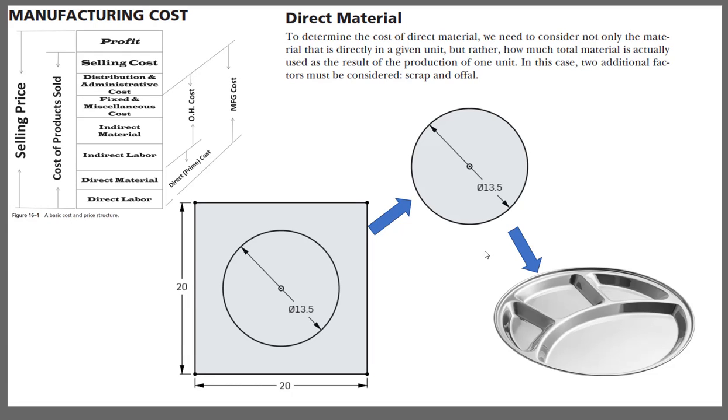Today I am going to talk about the direct material cost estimation associated with the product. Let's say if you want to create a plate as shown in the figure here. Usually the manufacturing process starts with cutting out a square section or a rectangular section from a larger metal sheet.